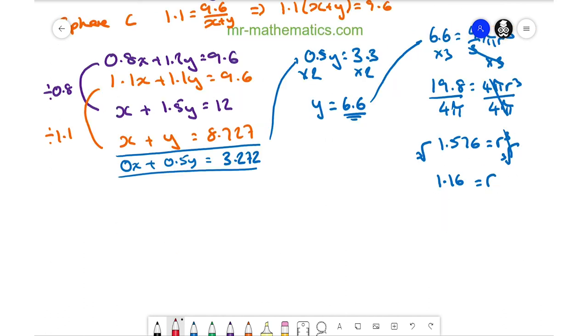Finally, I can use this radius to work out the surface area of sphere B. This is 4π R². The radius is 1.16, so the surface area is approximately 17 cm².